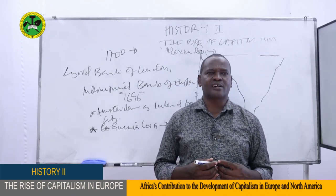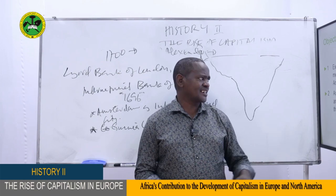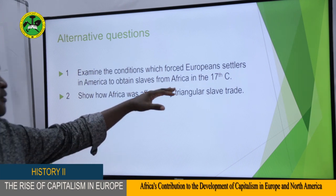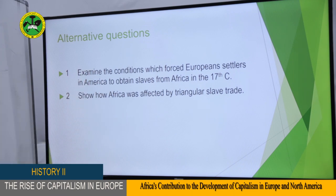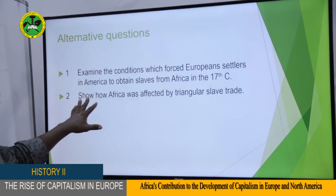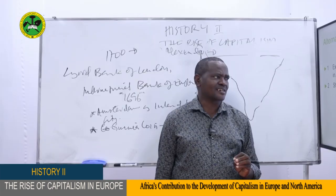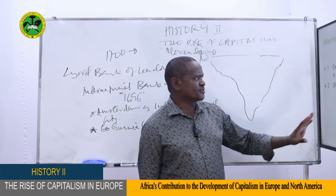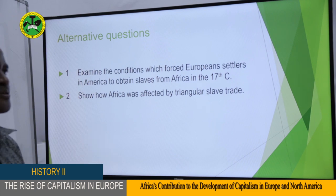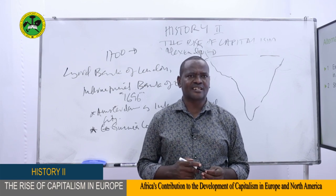Let us break for a while and be back. Welcome back, students. After going through our lesson today, I'm quite sure you can attempt these questions. The first question was: examine the conditions which forced European settlers in America to obtain slaves from Africa in the 17th century. The second question is: show how Africa was affected by triangular trade — we have mentioned the social, political, and economic impact. These questions are very simple and I know you have the answers. Let's end here and meet in another lesson. Thank you for watching and listening. Goodbye.